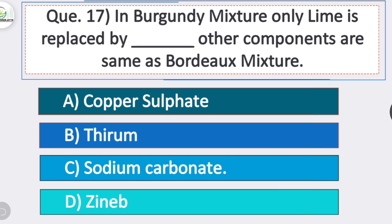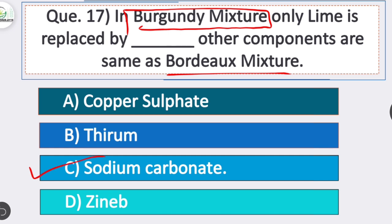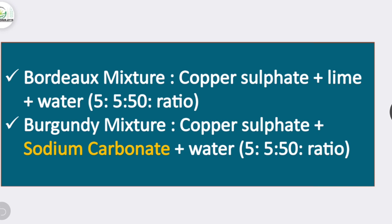Question 17: in Burgundy mixture, only lime is replaced by which component? Option C is correct — sodium carbonate. In Burgundy mixture, lime is replaced by sodium carbonate; other components are same as Bordeaux mixture. Bordeaux mixture is copper sulfate + lime + water in 5:5:50 ratio; Burgundy mixture is copper sulfate + sodium carbonate + water in 5:5:50 ratio.